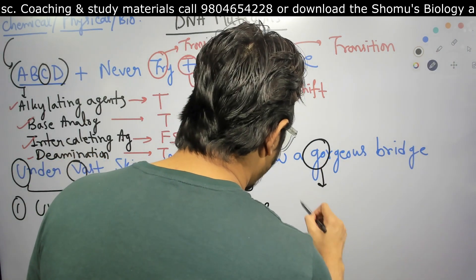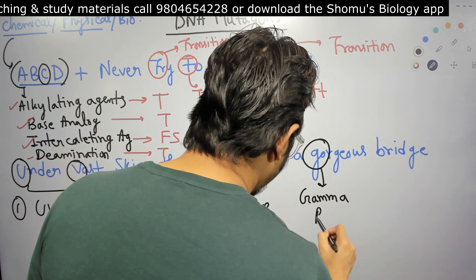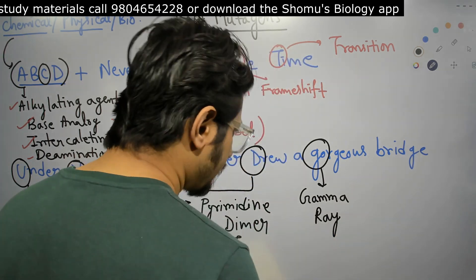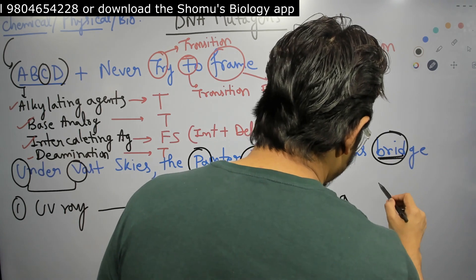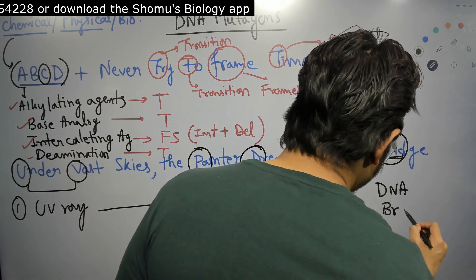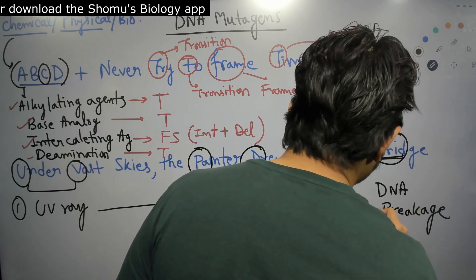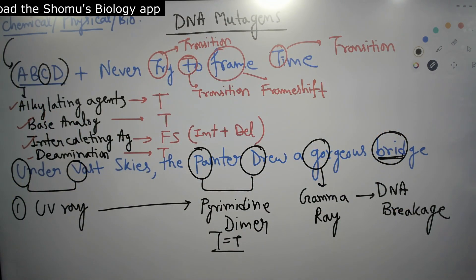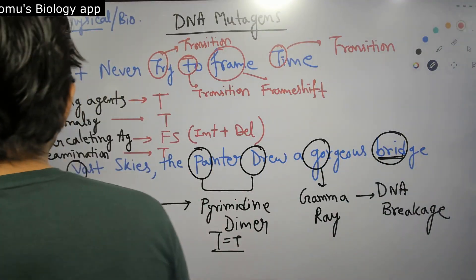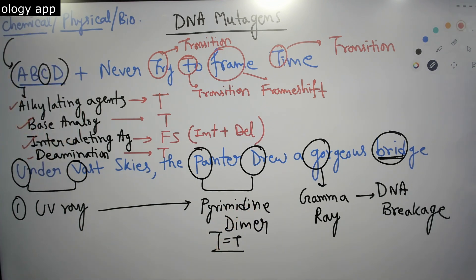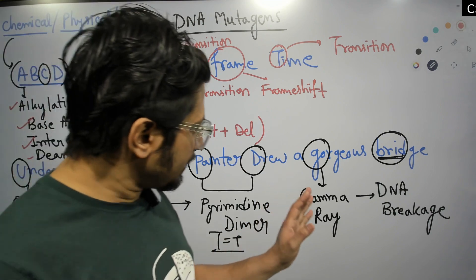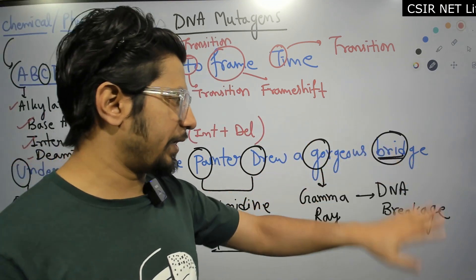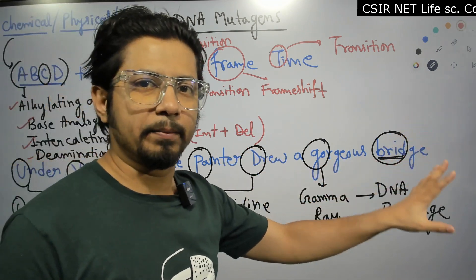'A gorgeous' gives us G for gamma ray — that is the second physical mutagen. And 'bridge' stands for breakage — DNA breakage. So gamma ray causes DNA breakage and DNA damage due to that breakage. UV ray causes pyrimidine dimer formation, and gamma rays cause DNA breakage.